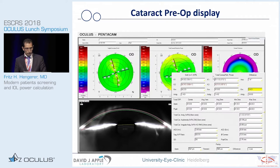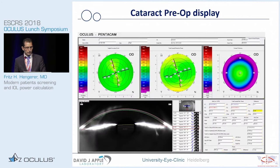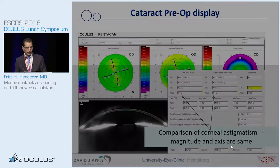The next step is to focus on higher order aberrations and spherical aberrations when we want to address the wish for enhancing depth of focus using asphericity-correcting lenses, or if we want to leave the patient with their current asphericity. And finally, when we look at the difference between the SimK and the total corneal refractive power with regard to maximum astigmatism magnitude, we need to assess whether the axis is the same or if we have to change our decision when implanting a toric intraocular lens.